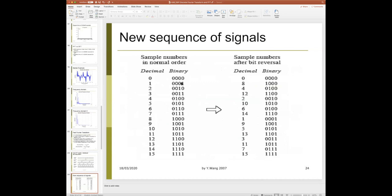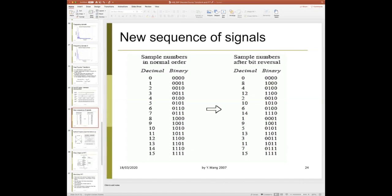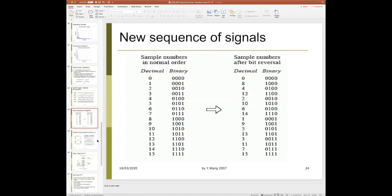The reason FFT is fast: you can represent numbers 0 to 15 in binary, and when rearranging the sequence for FFT computation — going from 0, 8, 4, 12, etc. — in binary you can just flip the bit order from left to right to get the required sequence number. In a computer this is much faster than any sorting algorithm.